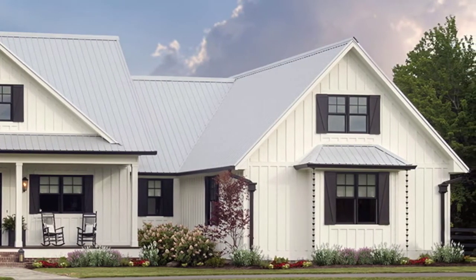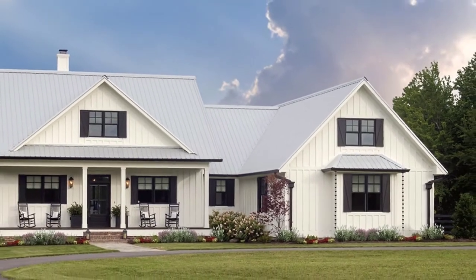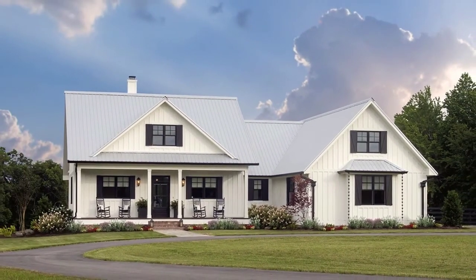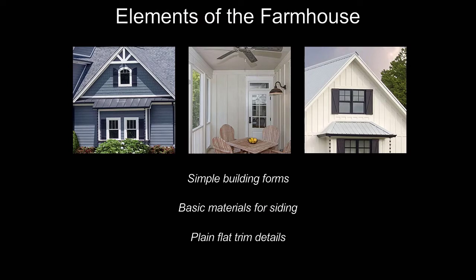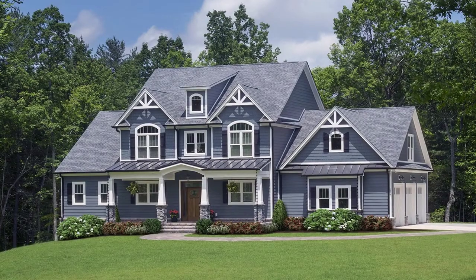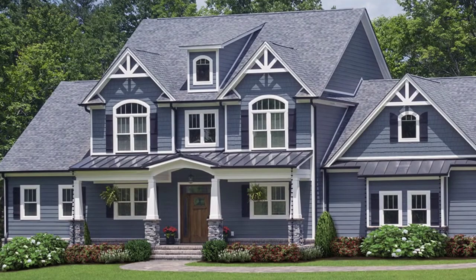Functionality was the most important criterion. The farmhouse was constructed with materials that were readily available locally, with some made on site. Those types of elements included simple building forms, basic materials for siding like horizontal siding boards or vertical board and batten, and plain flat trim details. These were the basis for the classic farmhouse and were dictated by necessity. They are now an integral part of the modern farmhouse style, but are dictated by aesthetic choice.